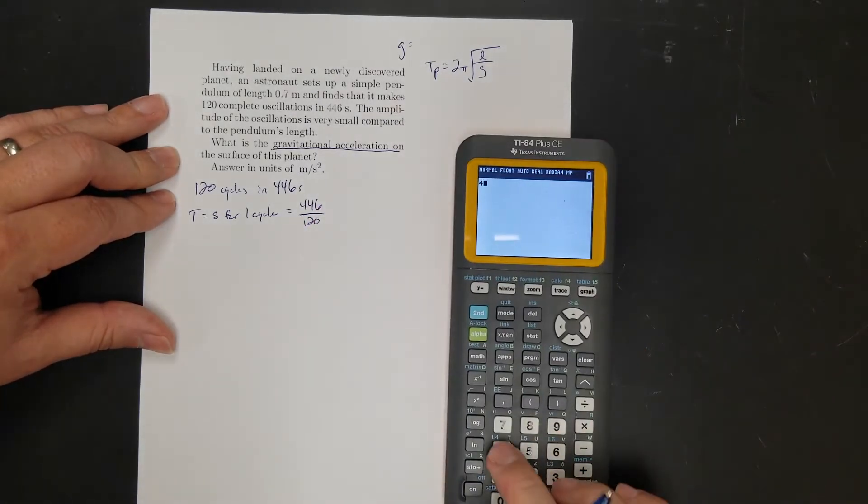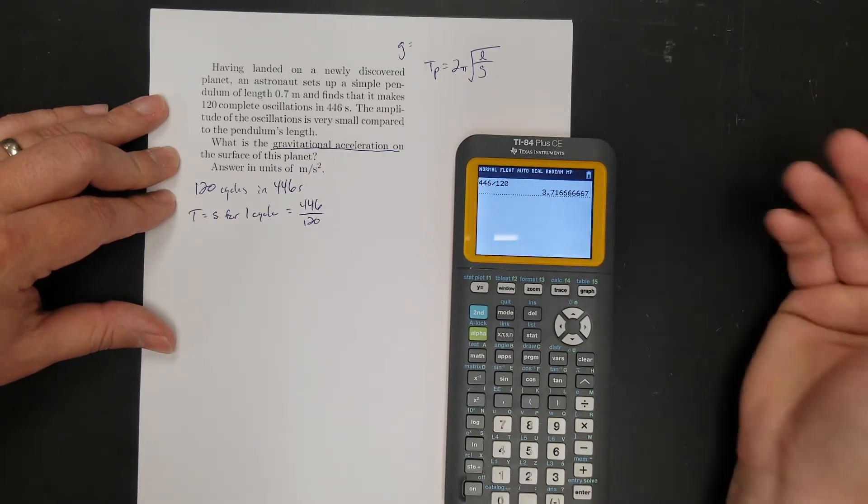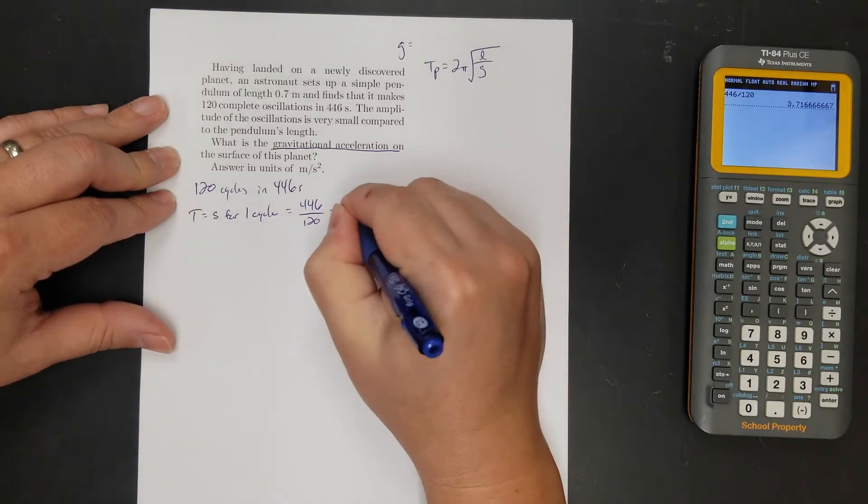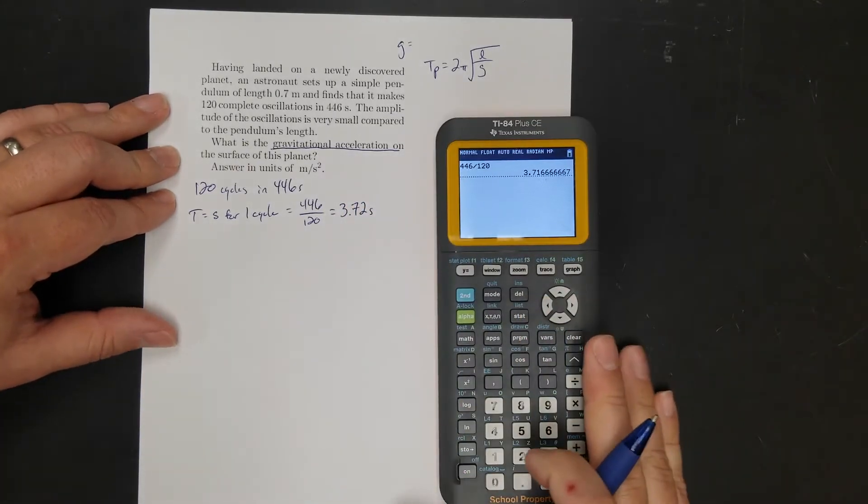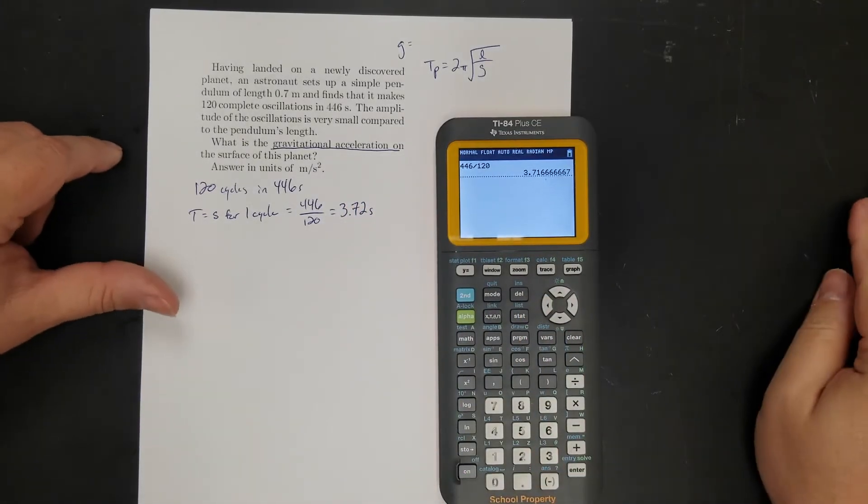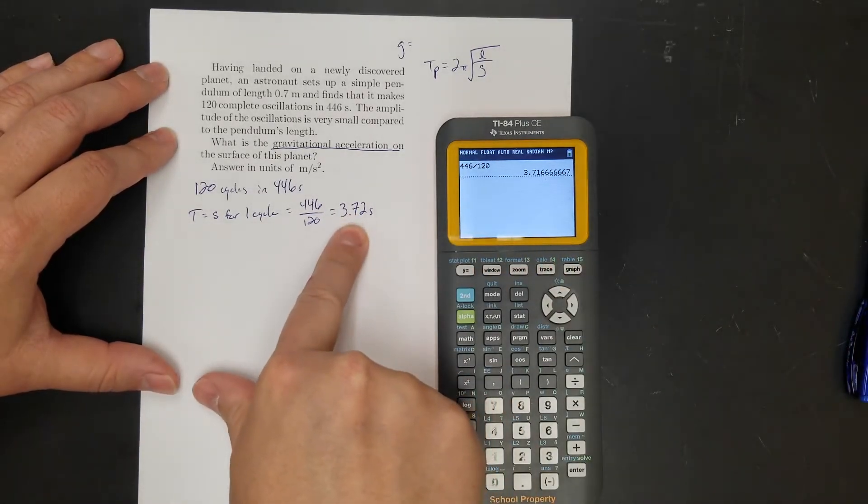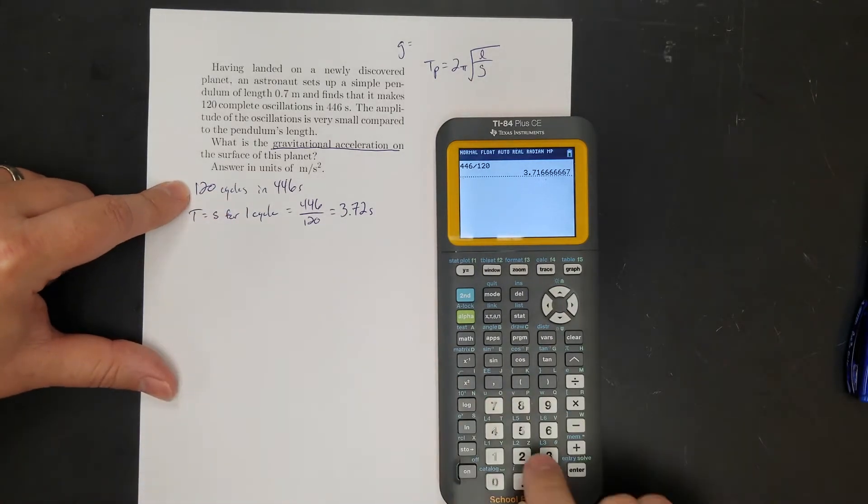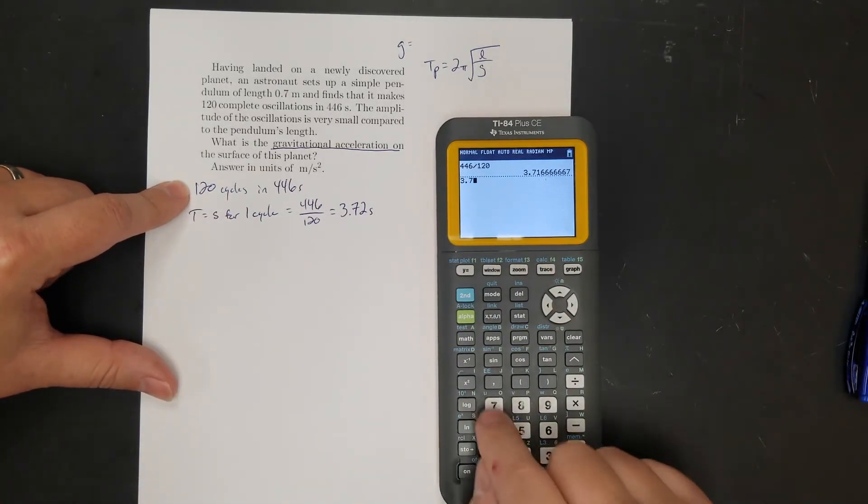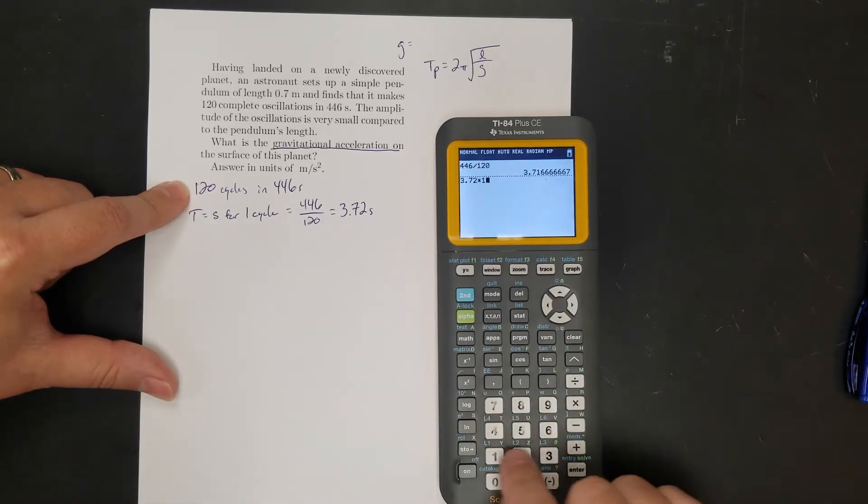So I mean you could just guess and check and plug in, but the easy way would be to think about what period means. Period is how many seconds for one cycle. Period is measured in seconds. So if I want this in seconds, 446 is going to have to be in the numerator. Because it'll be seconds divided by cycles. Seconds for one cycle. So it's going to be 446 over 120.